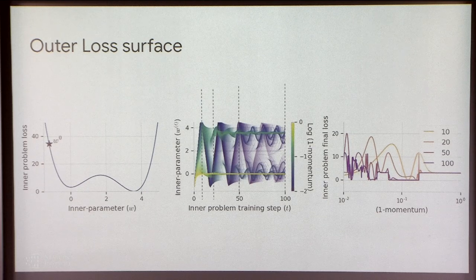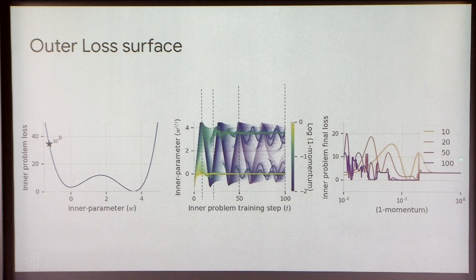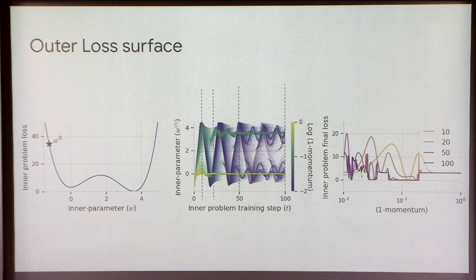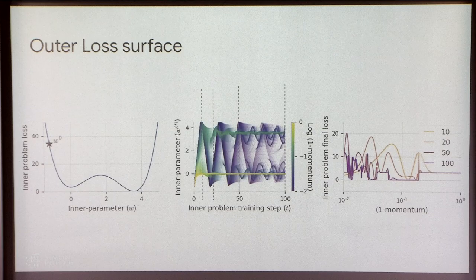You might imagine the problem of meta-training an optimizer — where you unroll the optimizer for 100 training steps — as the problem of doing gradient descent on a chaotic surface. This surface has rapid, extremely high frequency fluctuations in its loss value. Additionally, gradients will not be very useful because they're going to be either very close to zero or very close to infinity.